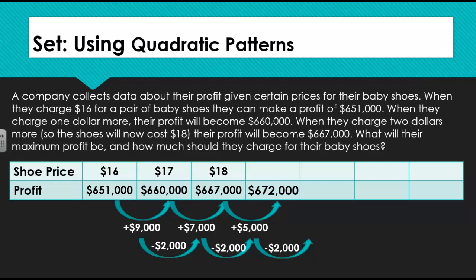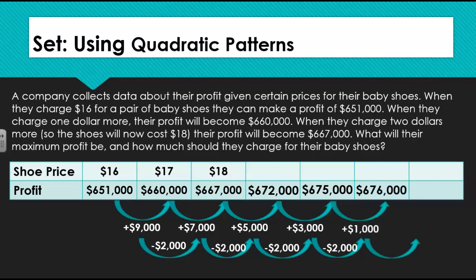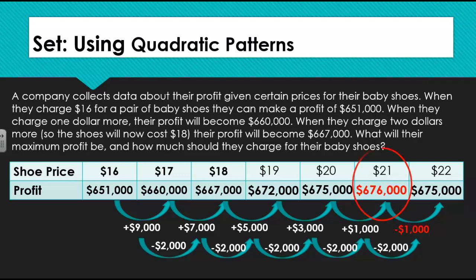The next increase would then be expected to be a three thousand dollar increase, then a one thousand dollar increase, and then a one thousand dollar decrease. Now that we have our table filled in, we can see clearly that our maximum profit would be six hundred sixty-seven thousand dollars and would occur when we charge twenty-one dollars per pair for the shoes.